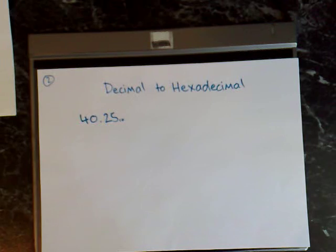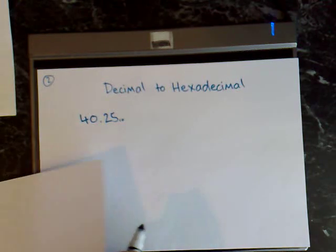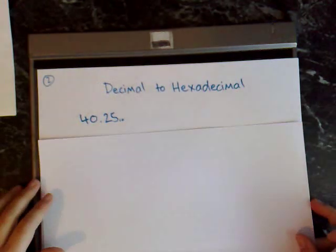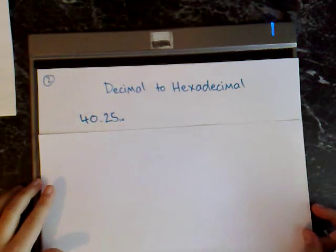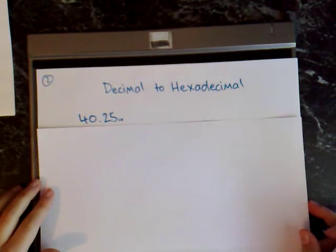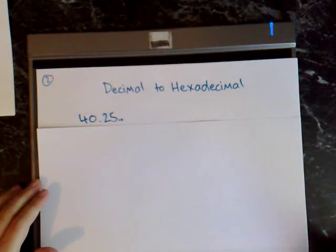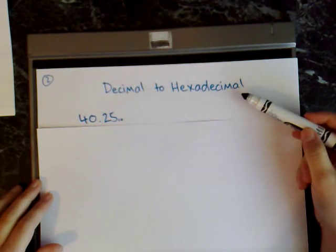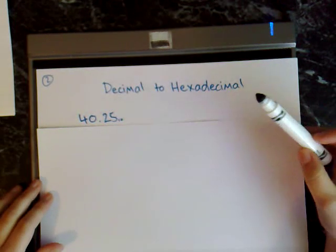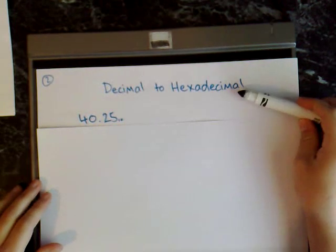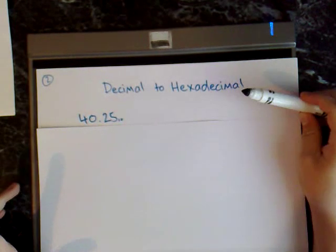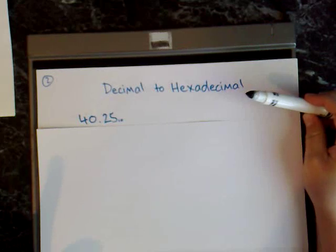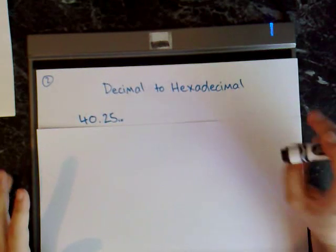For the second example I'm going from decimal to hexadecimal. The process is very much the same, except this time we're using powers of 16 because hexadecimal is base 16.